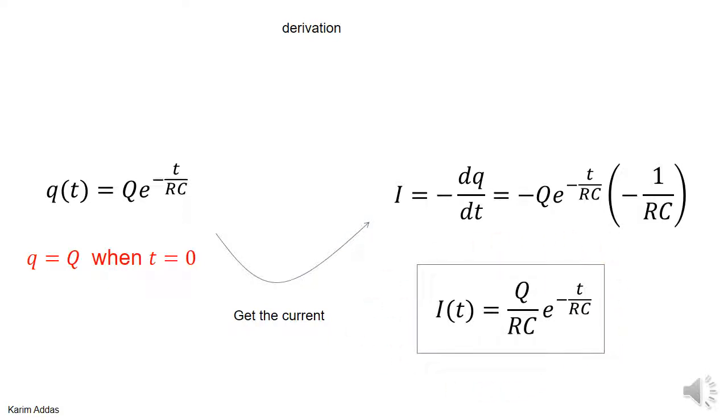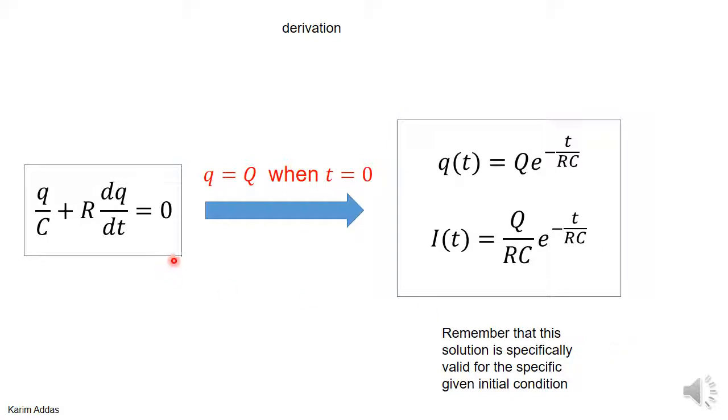So to summarize, this differential equation when you subject it to this initial condition gives you this solution. The charge decreases with time, the current decreases with time.